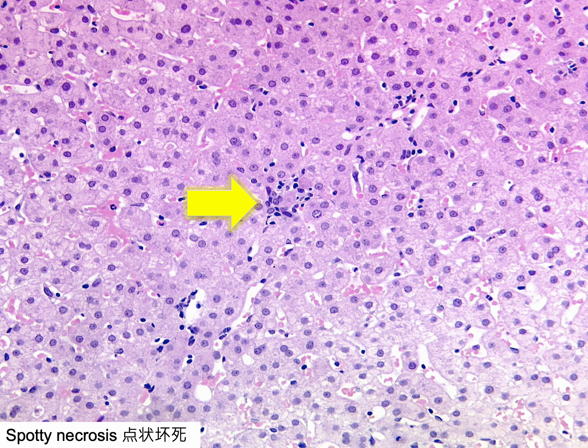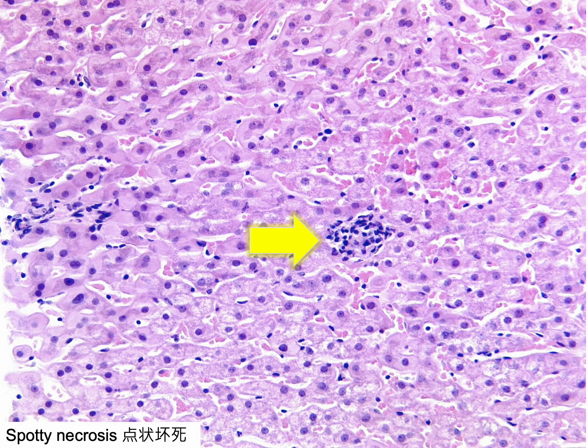A small cluster of lymphocytes and activated Kupffer cells/macrophages is observed in the lobule surrounding a dying hepatocyte. This is spotty necrosis, also referred to as focal necrosis, lytic necrosis, or oncotic necrosis, and involves the death of an individual or a small number of hepatocytes. The necrotic hepatocyte is often not identifiable, though the resulting parenchymal collapse, condensation of the reticulin framework, and associated mononuclear inflammatory cells can be recognised. Like apoptotic bodies, spotty necrosis is a nonspecific finding associated with a very broad range of liver diseases.